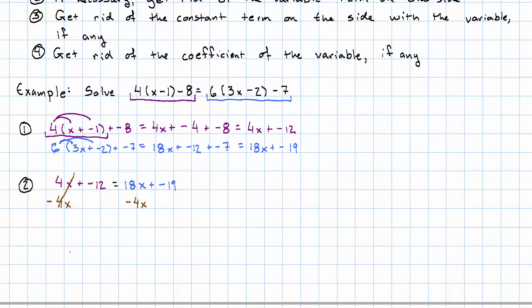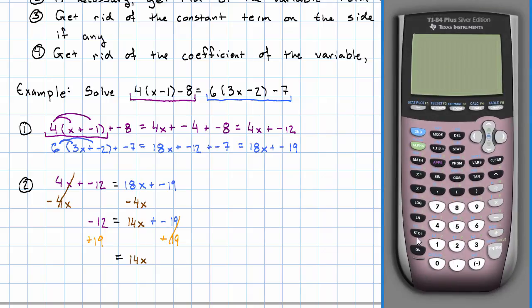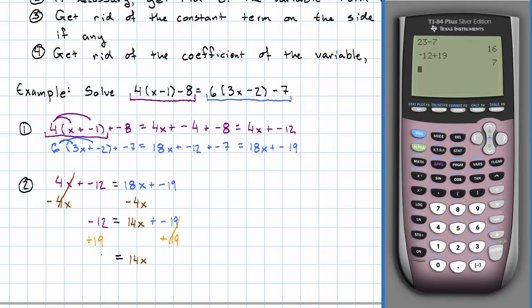4x and negative 4x cancel out, so all that remains on the left is negative 12. That means I need to get rid of the negative 19 on the right. To cancel it out, I need a positive 19. I'll copy the 14x, and using the calculator, negative 12 plus 19 gives me 7. That was step 3.